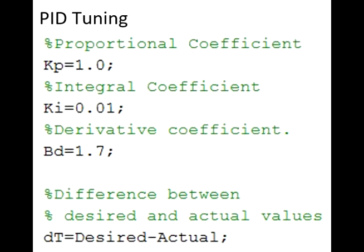To understand tuning, we need to understand these coefficients. Kp, the proportional coefficient. Ki, the integral coefficient. And Bd, the derivative coefficient. Another variable is the error, dT, which is equal to the desired value we want to control minus the actual value in the system. The examples I gave so far were to minimize desired and actual heading and minimize desired and actual encoder values.